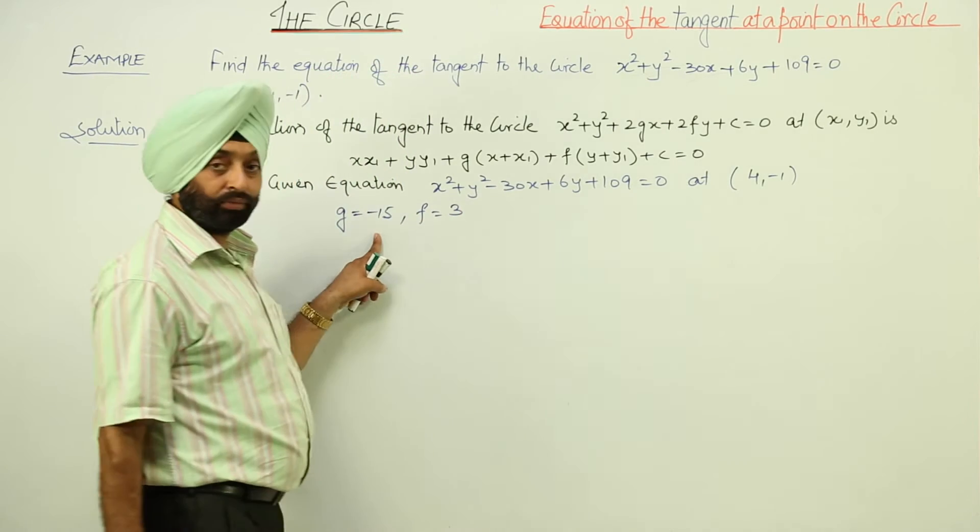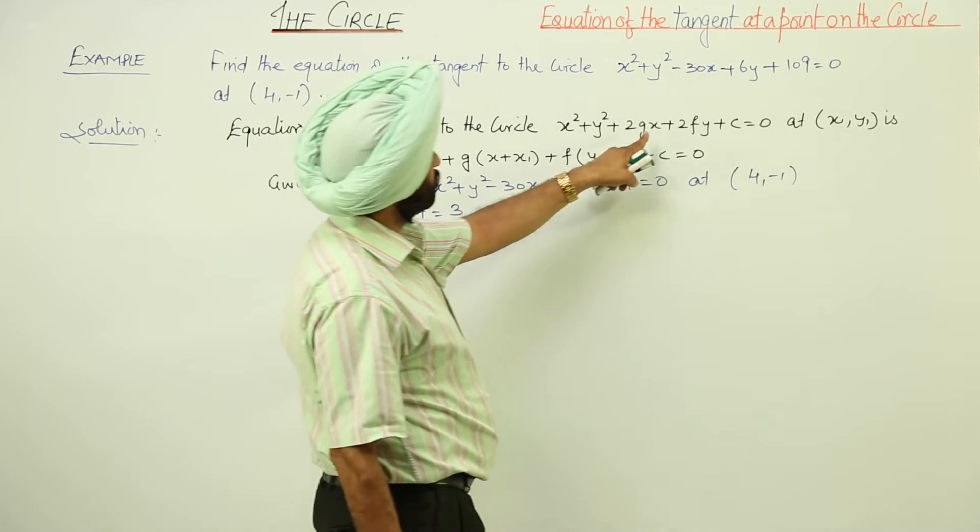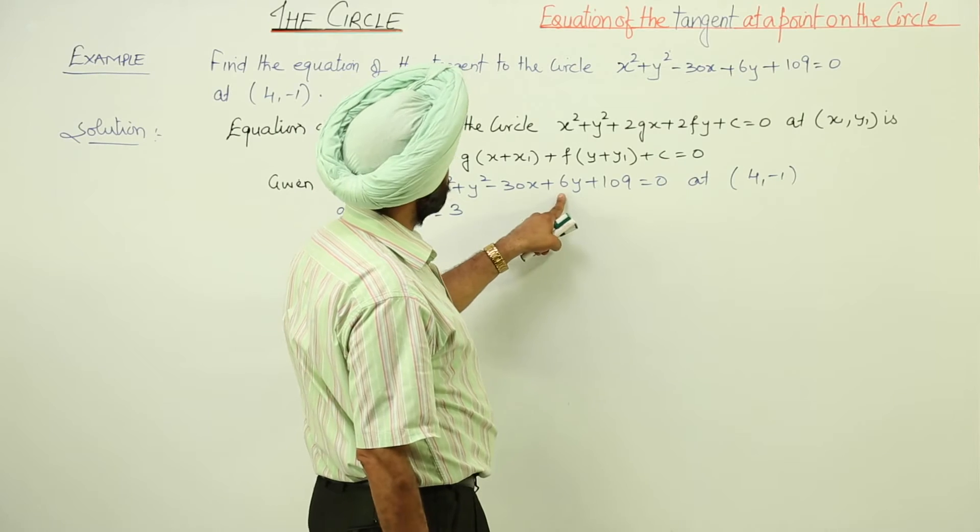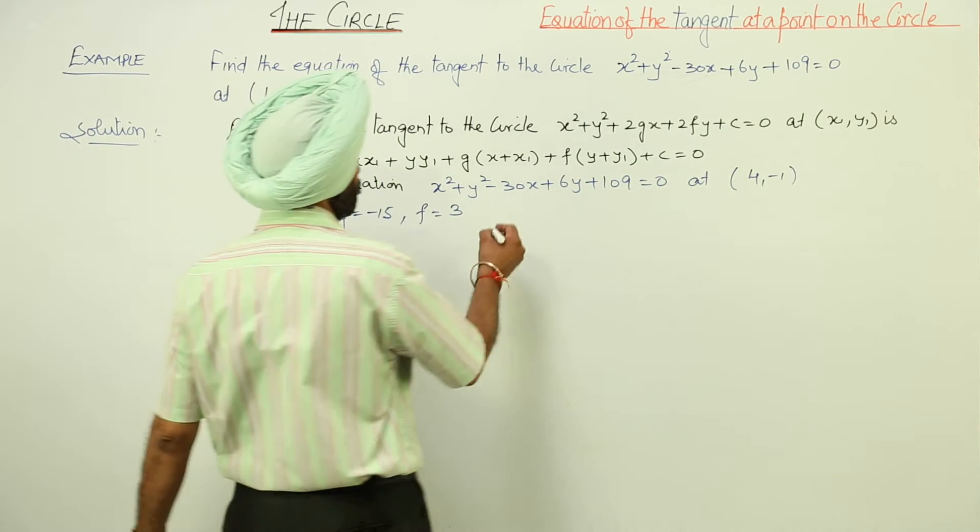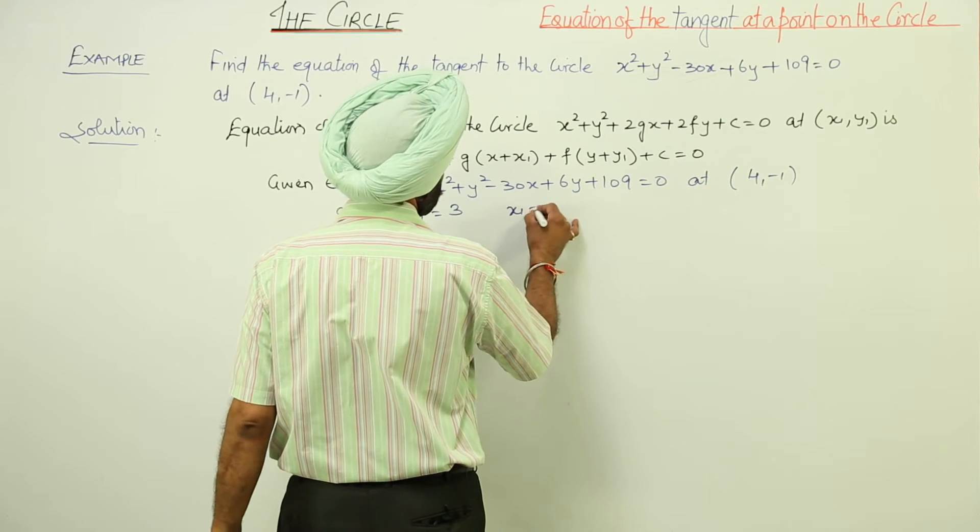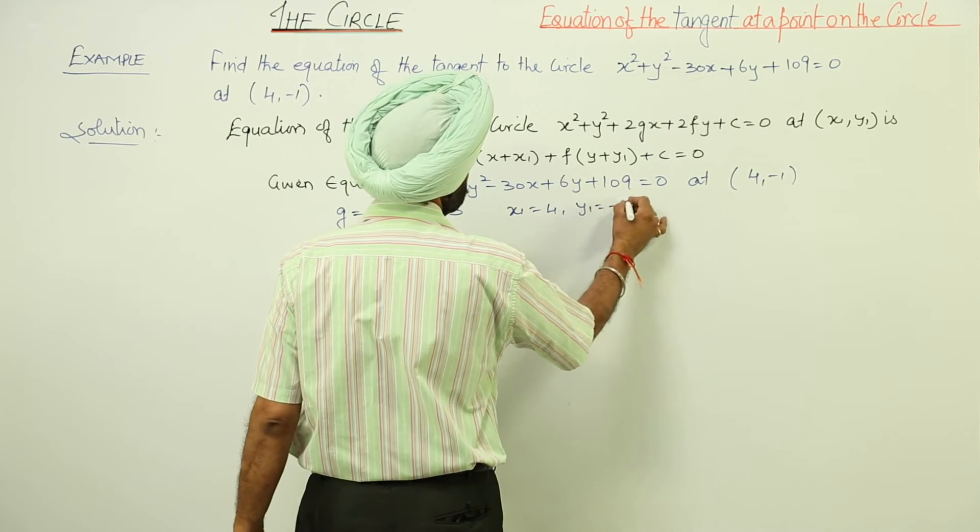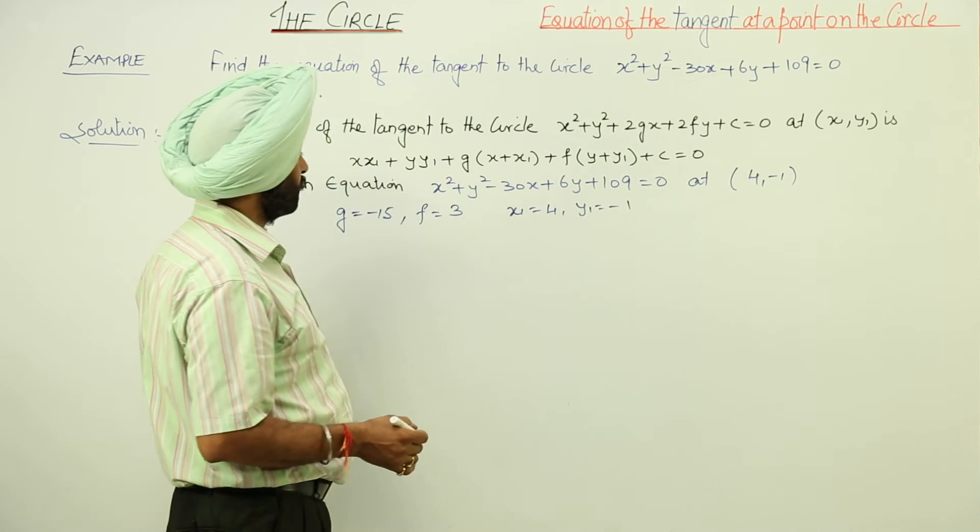Twice of f is 6, therefore f = 3, and x₁ = 4 and y₁ = -1.